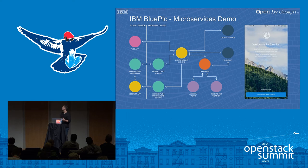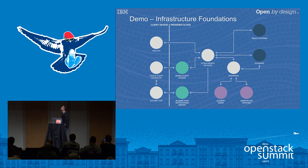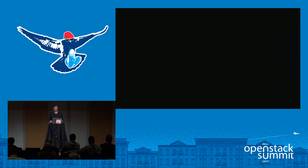What Sean was covering earlier is this concept of infrastructure foundations. In the context of BluePick, everything that has color in the architecture diagram would be categorized as infrastructure foundations. All the services we just went through — the role they play — that is BluePick's infrastructure foundation.